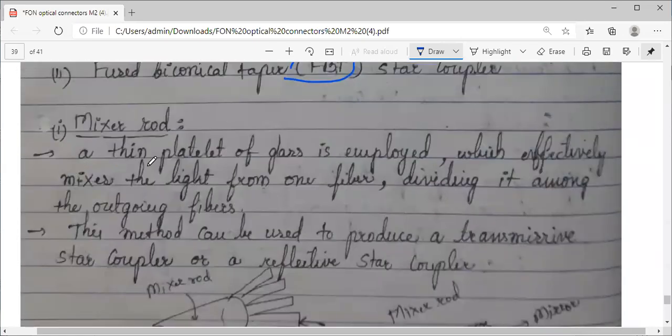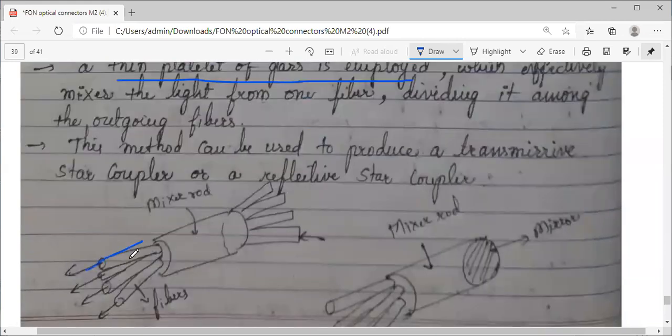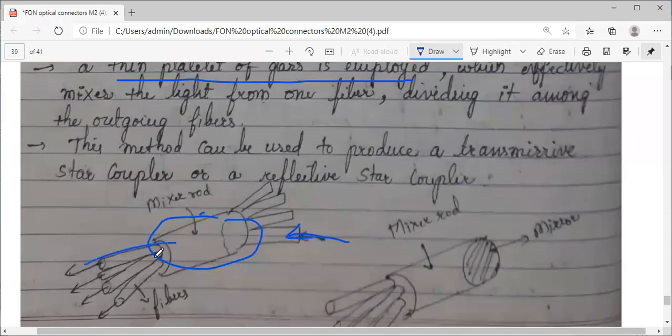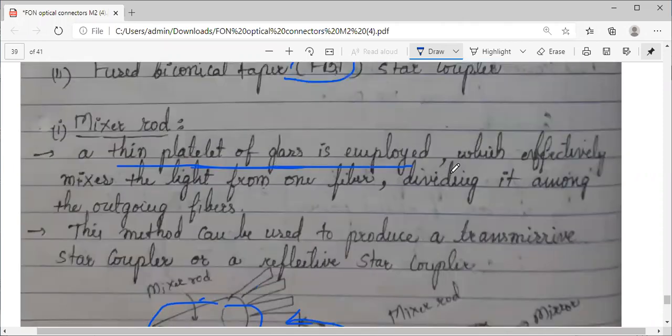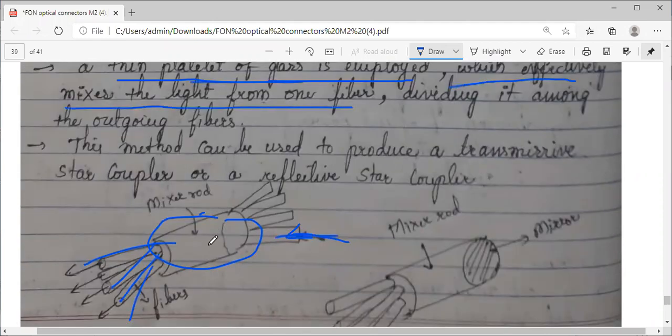Let's see what is mixed rod. A thin platelet of glass is employed here. You can see the structure: many optical fibers are bunched together, this is your mixer rod. The signal comes in, and the mixer rod mixes the light from one fiber and divides it among all the outgoing branch fibers.